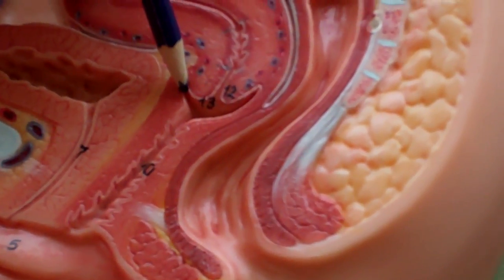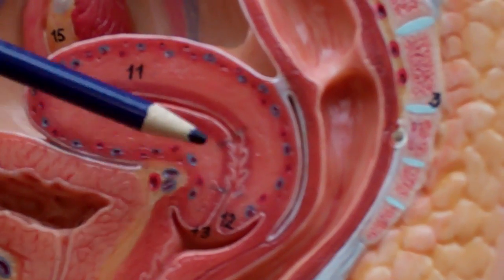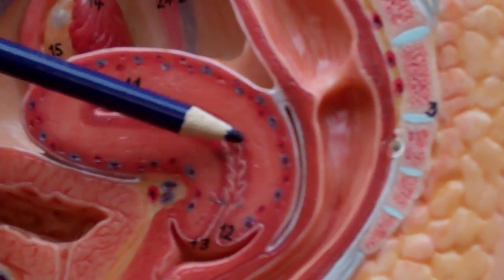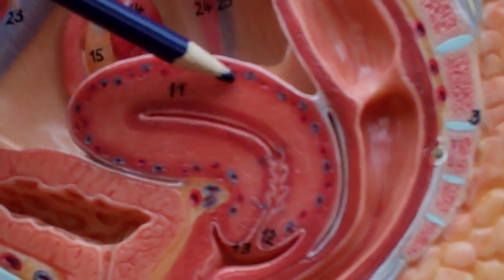Again, the anterior and posterior fornix. This is the cervix or the cervical region, essentially below this line that you see someone else has drawn on the model. And then above that, that's the uterus.